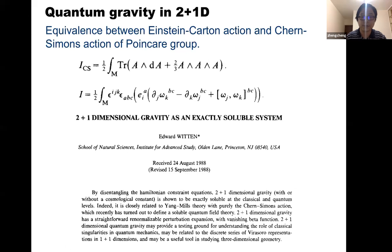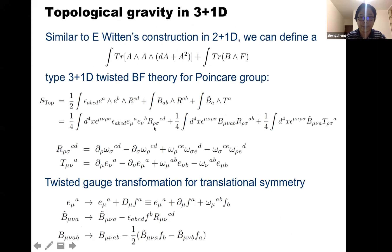Now I try to go to 3+1D. In 3+1D, the most well-known theory is the BF theory. So in this case, we can also imagine a formal generalization of the twisted BF theory in 3+1D. We can start from a BF term and add a so-called ADA term. But because here it's a non-Abelian gauge field, we also need an additional A-squared term. In such a formal generalization, if we choose A to be the Poincaré group and rewrite it in components, we see that the ADA term is exactly the Einstein-Cartan action in first-order form: E wedge E wedge R.